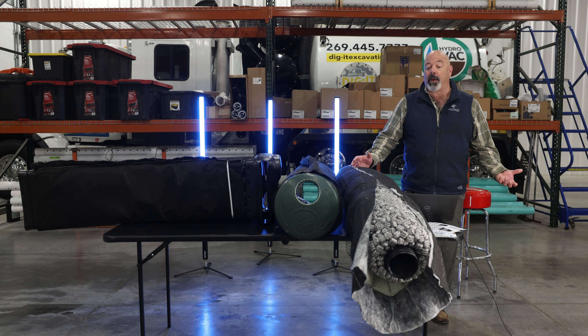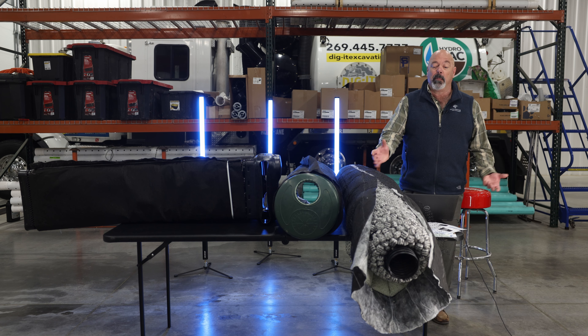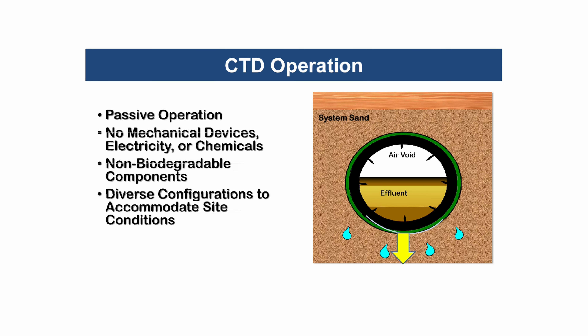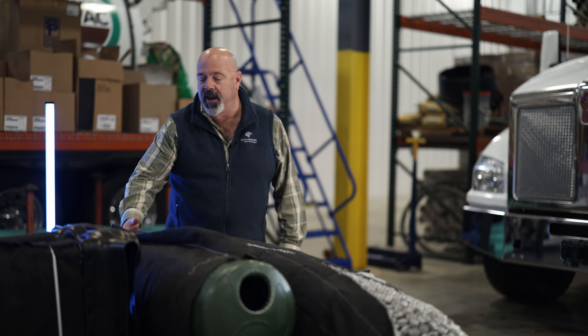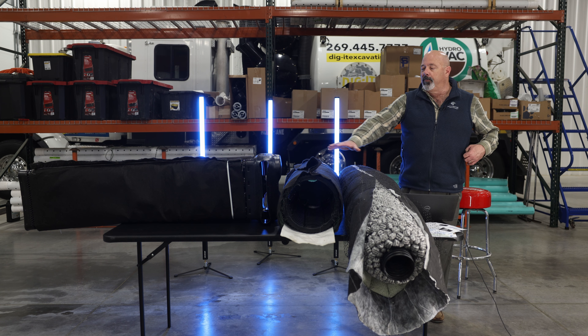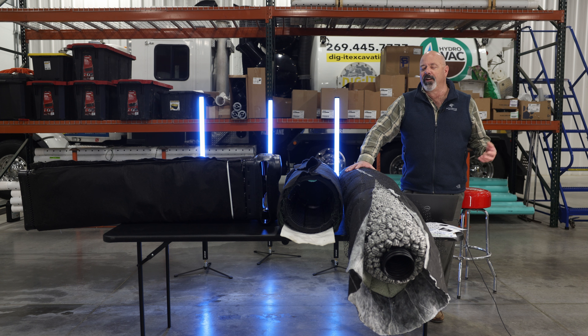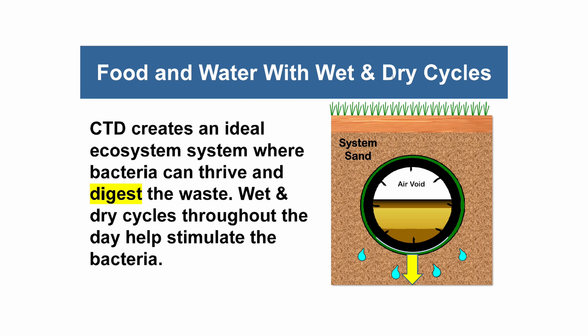Functionally, these systems are typically all passive. The liquid runs in and bio mat starts developing inside the product. Biology is going to attach to the fabrics. There are some other fabrics inside the AES product as well. Even in a conventional field, it's literally about a wet and dry cycle — you need that wetting and drying cycle to help create biological activity to actually help digest.